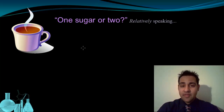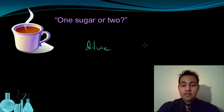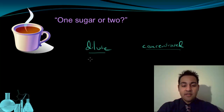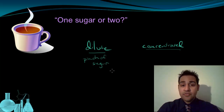One way of describing the amount of solute dissolved is with the terms dilute and concentrated. These are terms you're probably familiar with, but let's take a look at them in the context of this cup of coffee. If you were to add sugar to this coffee — let's say a pinch of sugar — you would refer to the amount of sugar in the coffee as a dilute mixture.